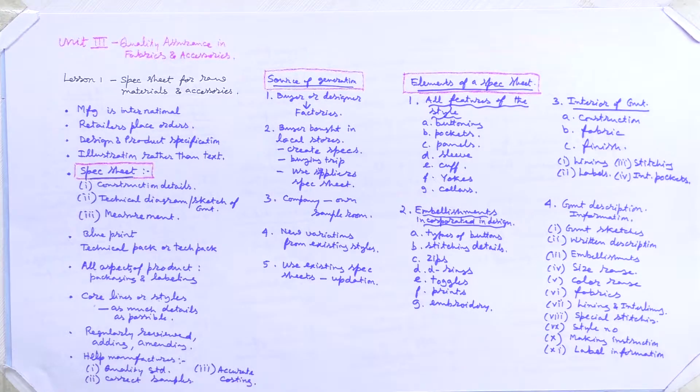Today we will see Unit 3: Quality Assurance in Fabrics and Accessories. In that unit, the first lesson is on Specification Sheet for Raw Material and Accessories. We will see what is the meaning of a specification sheet in quality assurance, what is the significance of it, and what things are covered in that specification sheet.